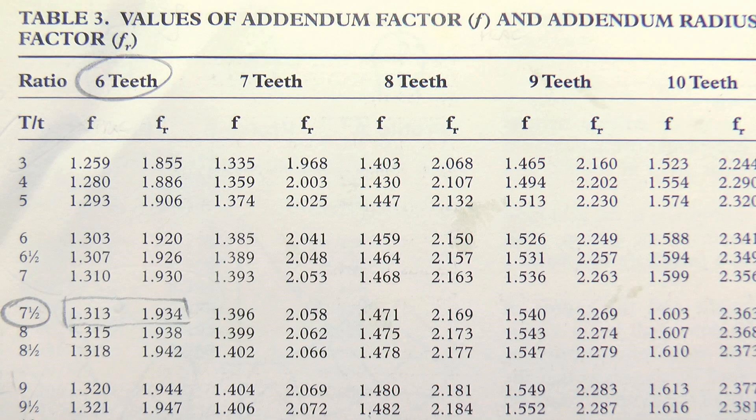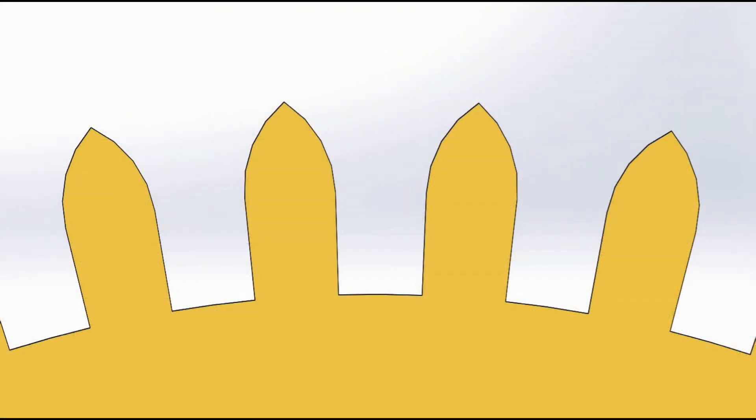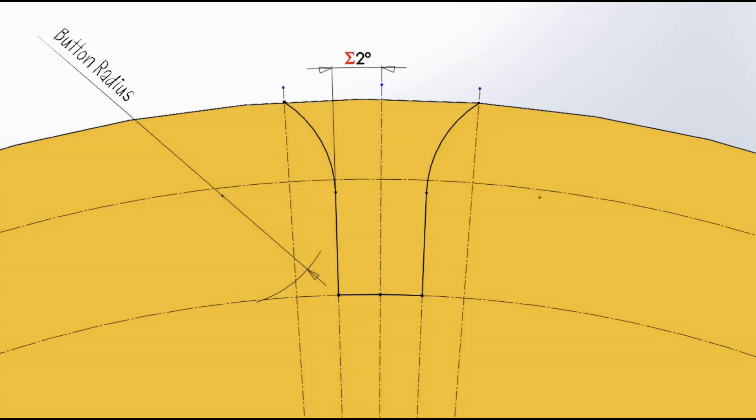This means that the geometry is only ever truly correct for that specific combination, but it turns out from a mechanical perspective to not matter enough to cause a problem. And the payoff is that it allows us to further simplify the geometry of the wheel cutter profile, by permitting a fixed flank angle of 2 degrees, and a single cutter that spans the entire range of teeth from 16 up to a rack.